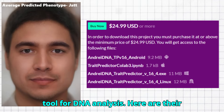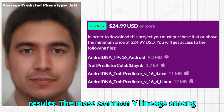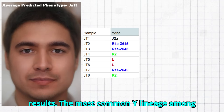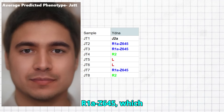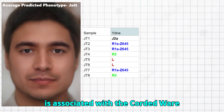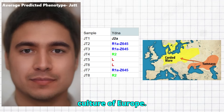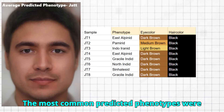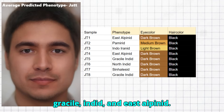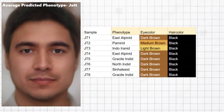Here are their results. The most common Y lineage among them was R1A-Z645, which is associated with the Corded Ware culture of Europe. The most common predicted phenotypes were Grassl-Indid and East-Alpinid.